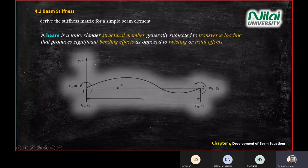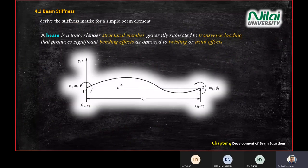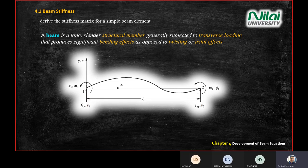Just to recap: Chapter 4 is about beams. Chapter 1 covered springs, Chapters 2 and 3 covered bar and truss, and Chapter 4 covers beams. The beam scenario we look at, as you can see on the screen, is a beam that shows the behavior of bending effect under loading.